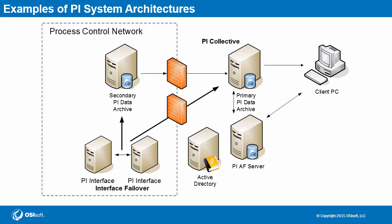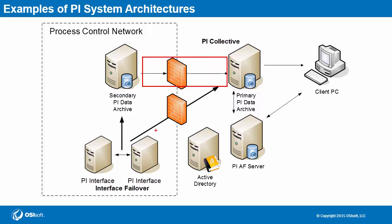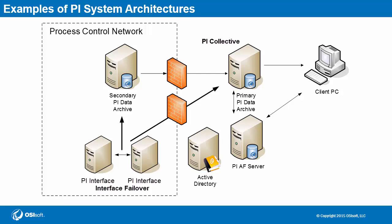In this next example we take one of the PI collective members out of the sensitive process control network and into the corporate network. This could be for a number of reasons. For example, if the amount of network traffic coming from end users is too much for the process control network to handle, you may consider taking a PI data archive out like here. This can immediately provide better quality of service for the users, although you will have to take into consideration a different type of traffic between the firewalls — namely PI collective synchronization and n-way buffering — but this might be worth it depending on the differences in network load with this architecture.